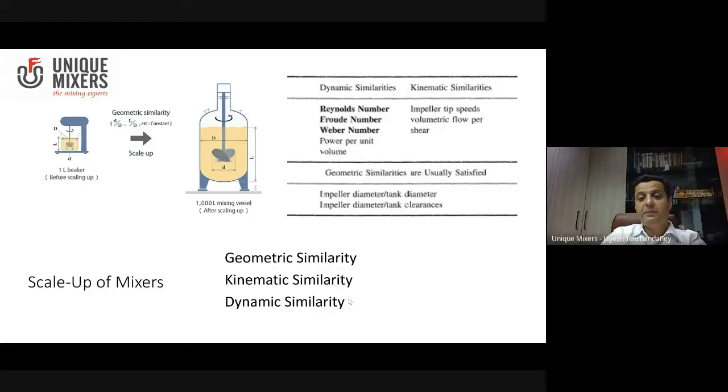Then we talk about kinematic similarities. When you talk about kinematic similarities, you talk about factors such as the speed of operation. Now, say you have a one liter mixer and that one liter mixer required 500 revolutions per minute for mixing to take place for that size. It does not mean that the production size mixer will also work at 500 revolutions per minute.